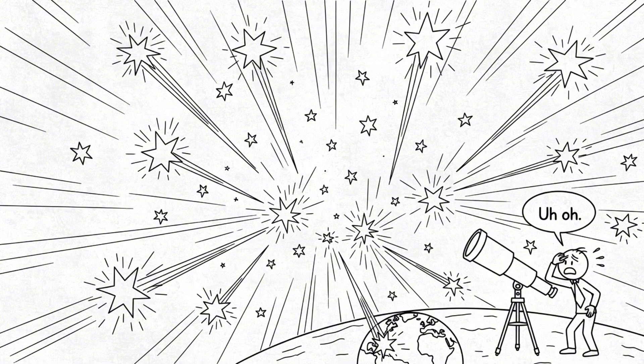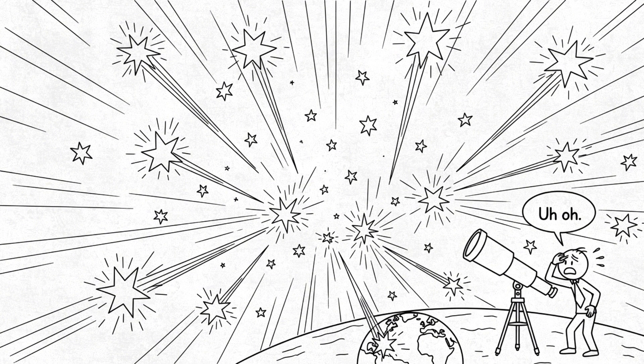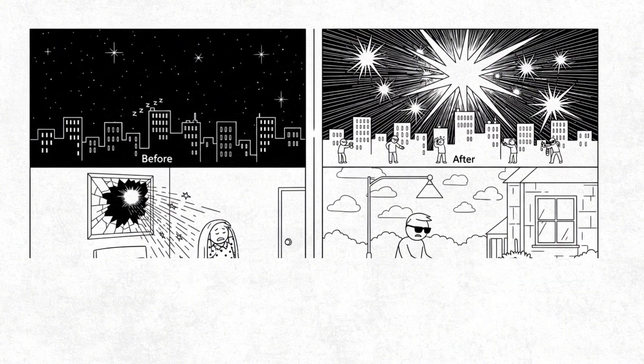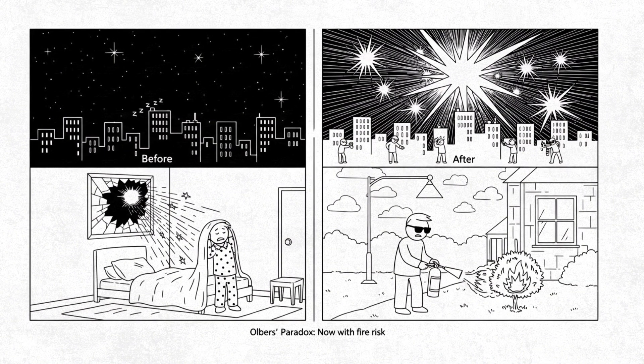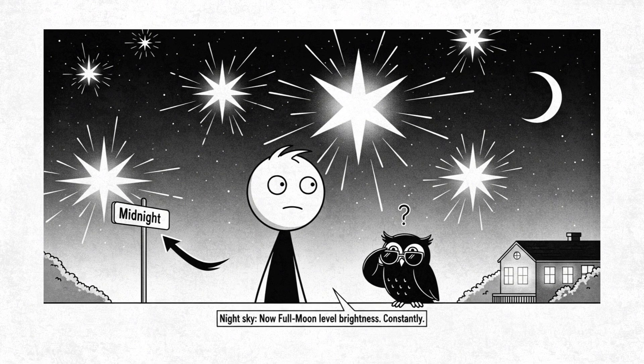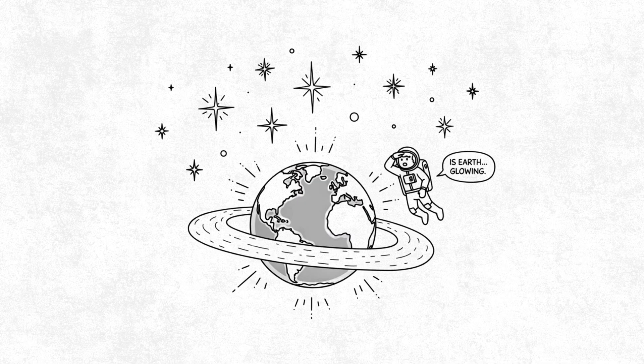But now, every star just got brighter, and their light is arriving now. The paradox doesn't just become a reality, it becomes a fire hazard. The night sky becomes as bright as the surface of the full moon, and that's before the Earth's atmosphere starts glowing from sheer photon overload.